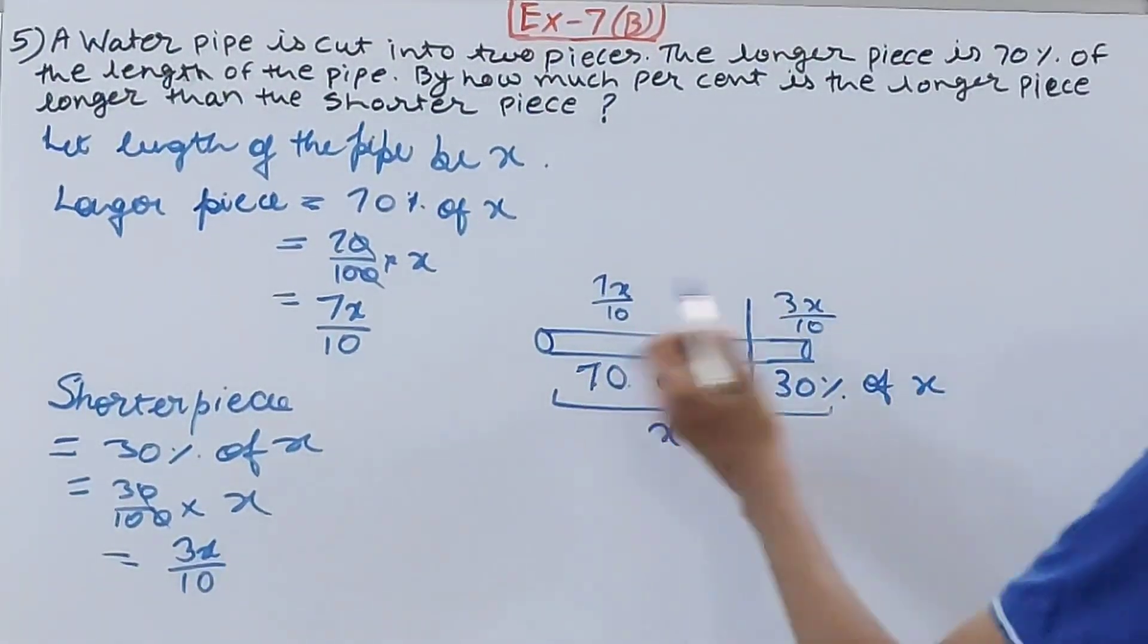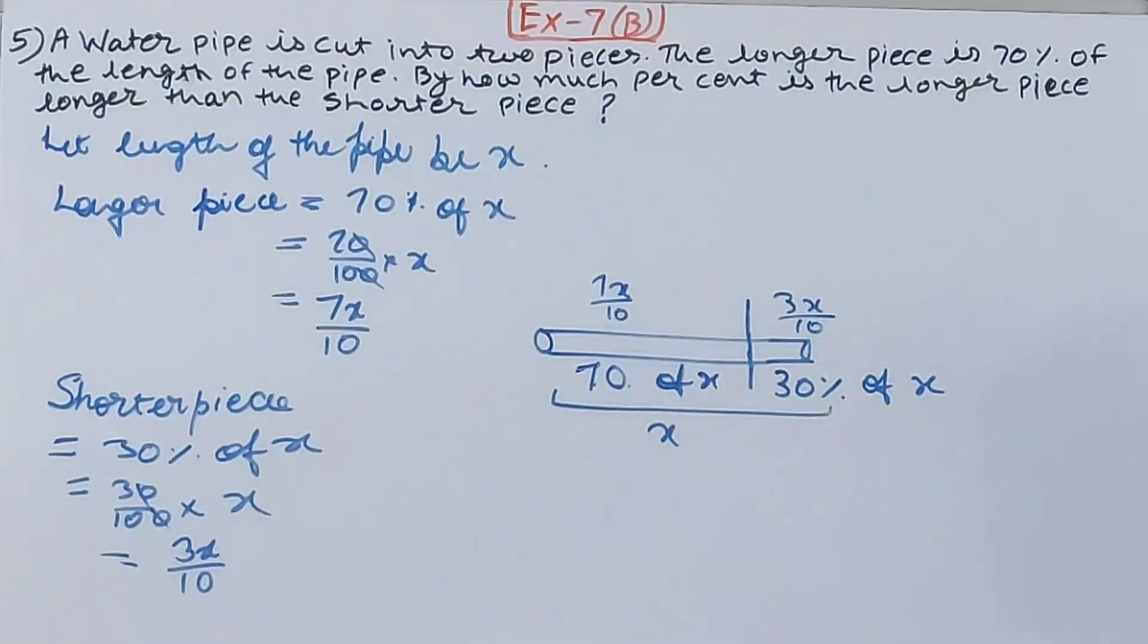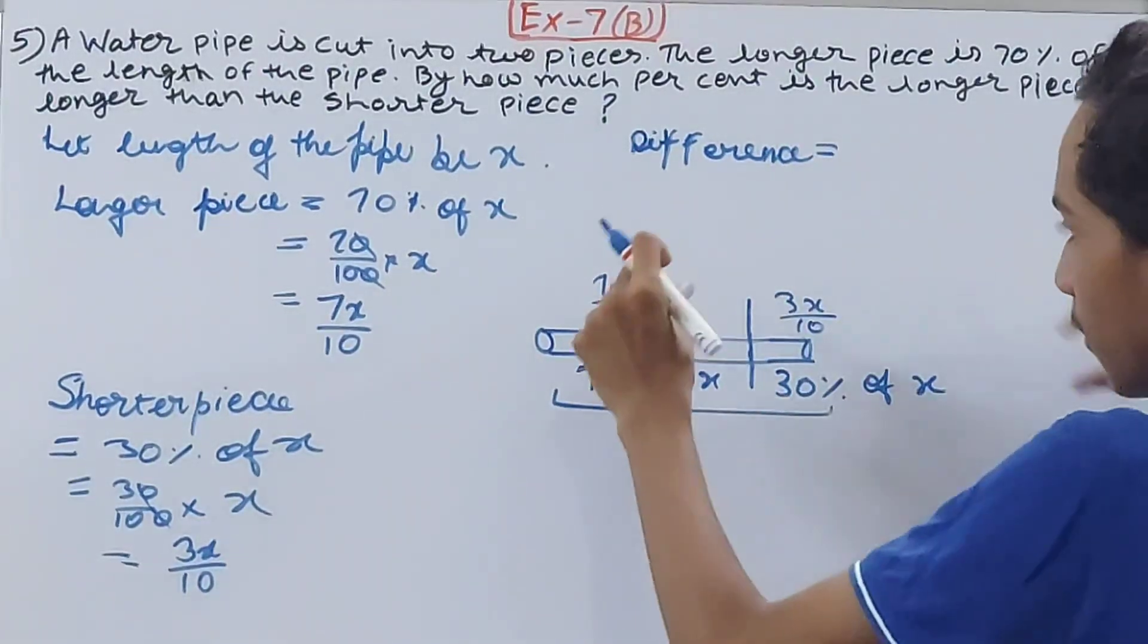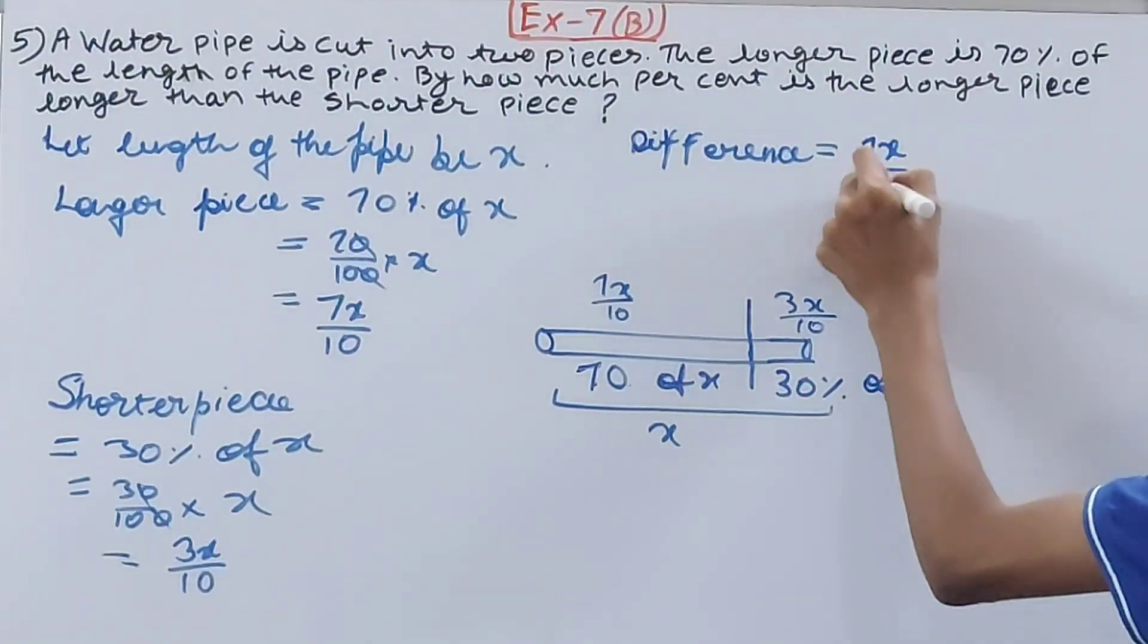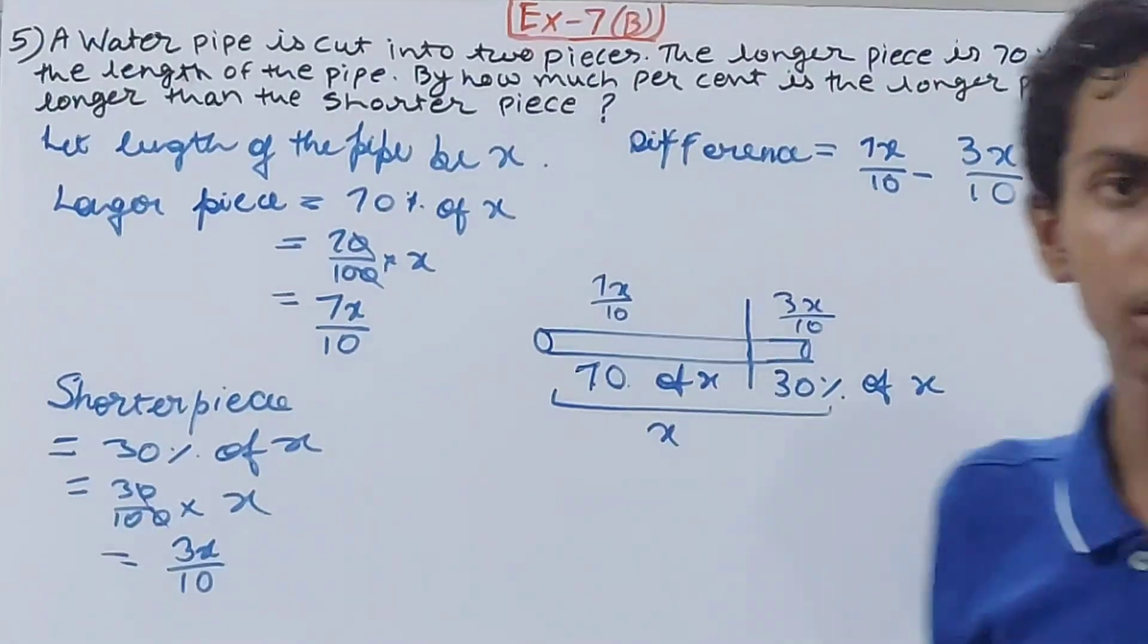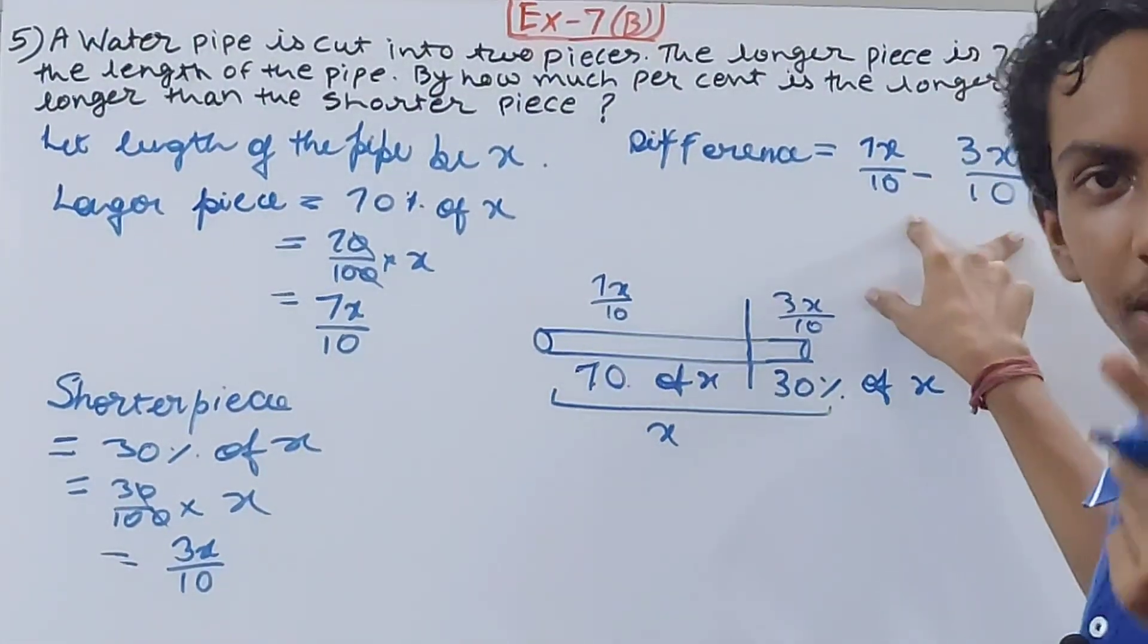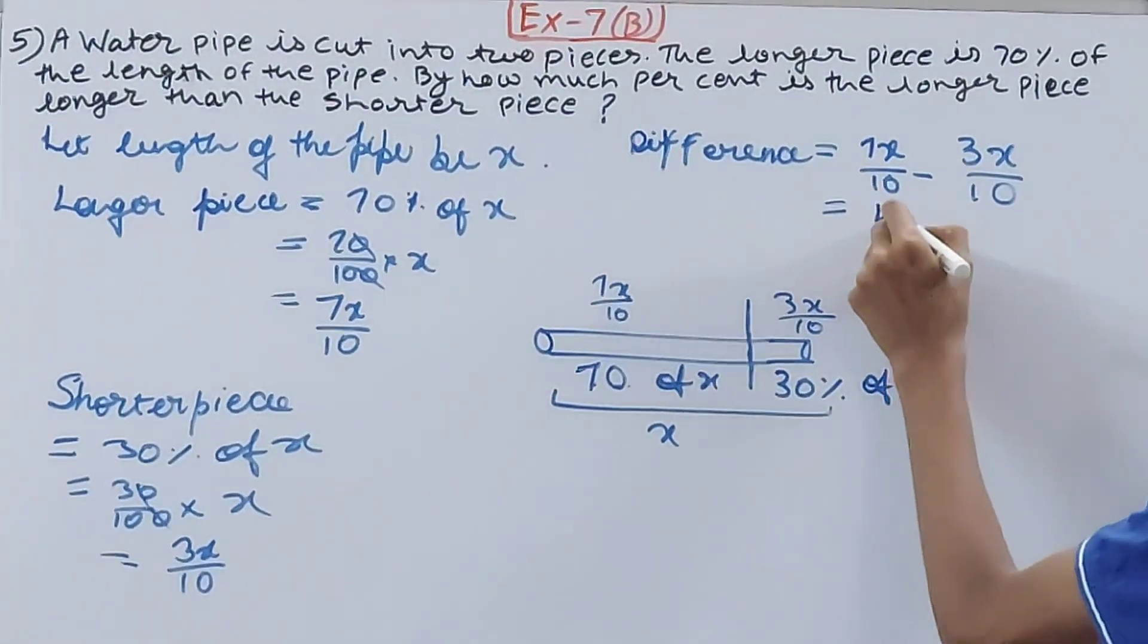Now see here: difference between the length of the two pieces. That means the difference will be, you subtract smaller quantity from greater quantity, so 7x/10 - 3x/10. Denominators are the same, 10, so do 7x - 3x, that is 4x. So the difference in their length is 4x/10.